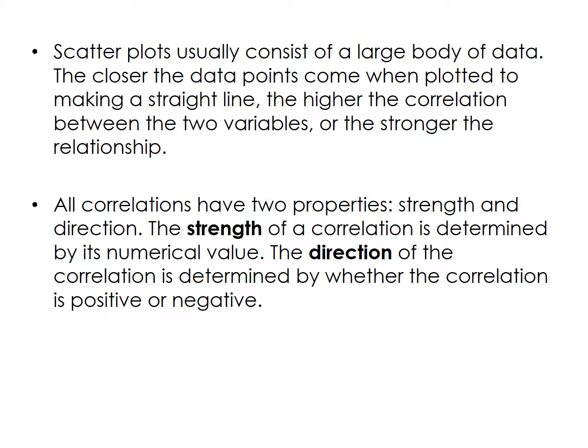Scatter plots usually consist of a large body of data. The closer the data points come to making a straight line when plotted, the higher the correlation between the two variables, and the stronger the relationship. All correlations have two properties: strength and direction. The strength of a correlation is determined by its numerical value. The direction is determined by whether the correlation is positive or negative.